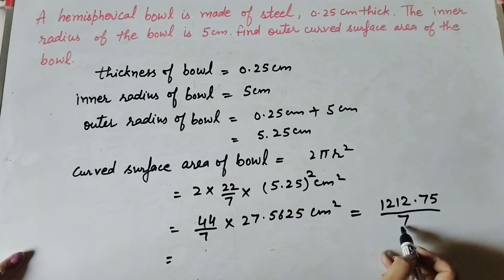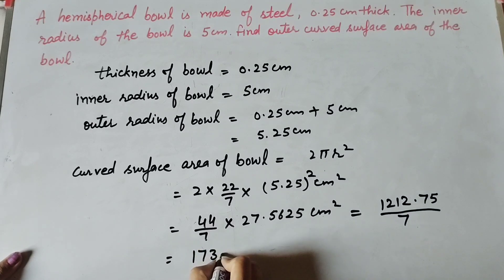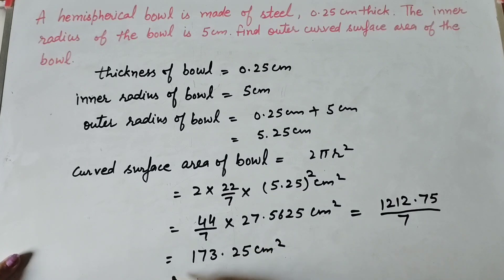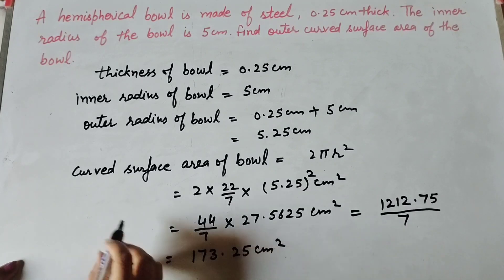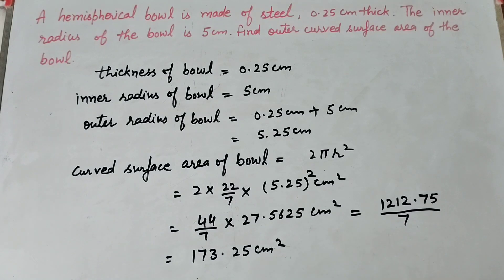We get the answer 173.25 centimeter square. So this is the outer curved surface area of the bowl. Thanks for watching — like, comment, and share my video, and subscribe to my YouTube channel.